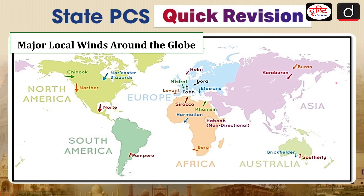Looking at major local winds around the globe, in North America we have Chinook and Norther — Norther coming from the north. We also have Northeaster, Norte, and Pampero in South America. In Africa we have Sirocco, Khamsin, Harmattan, and Haboob. In Europe we have Helm, Mistral, Bora, Levent, and Fohn. We also find Buran and Karaburan listed. We will discuss each of these one by one.